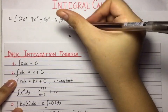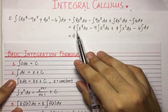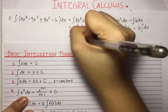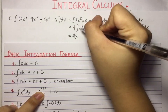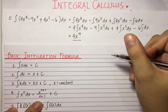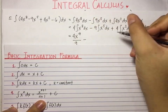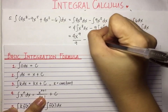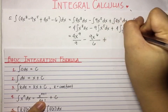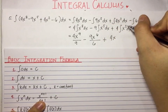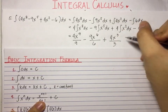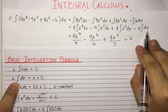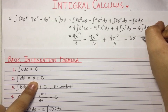Now we are ready to perform term by term integration. We apply power rule, theorem number 4, to the 1st, 2nd, and 3rd terms, and theorem number 2 to the 4th term. So we have 4 times x raised to 9 divided by 9, minus 9 times x raised to 6 divided by 6, plus 4 times x raised to 3 divided by 3, minus 6 times x. Then do not forget plus c.